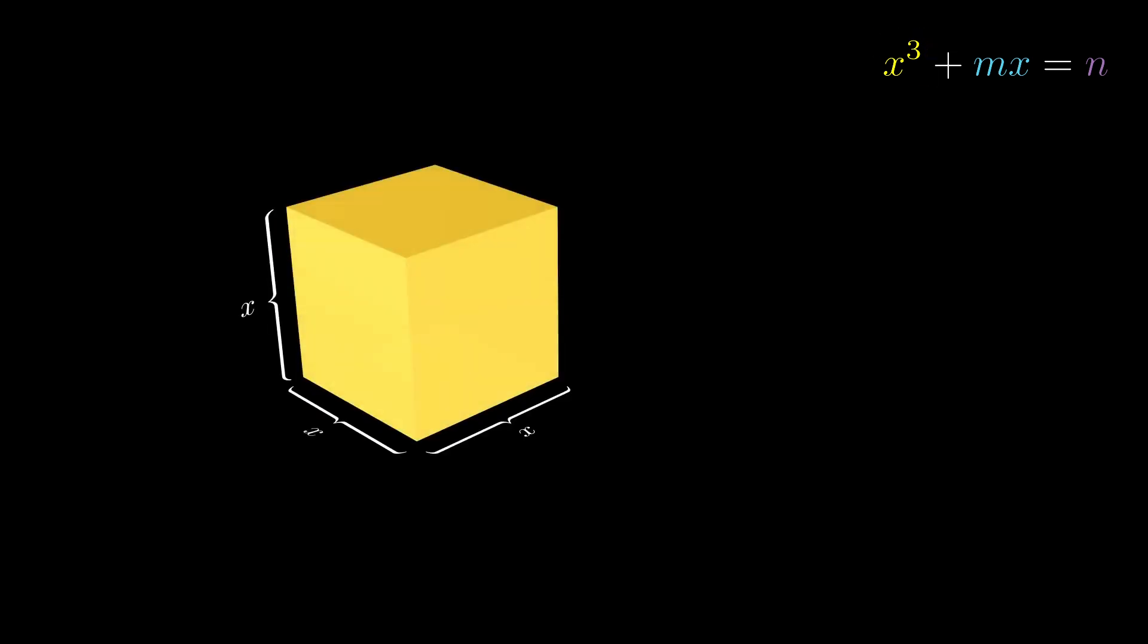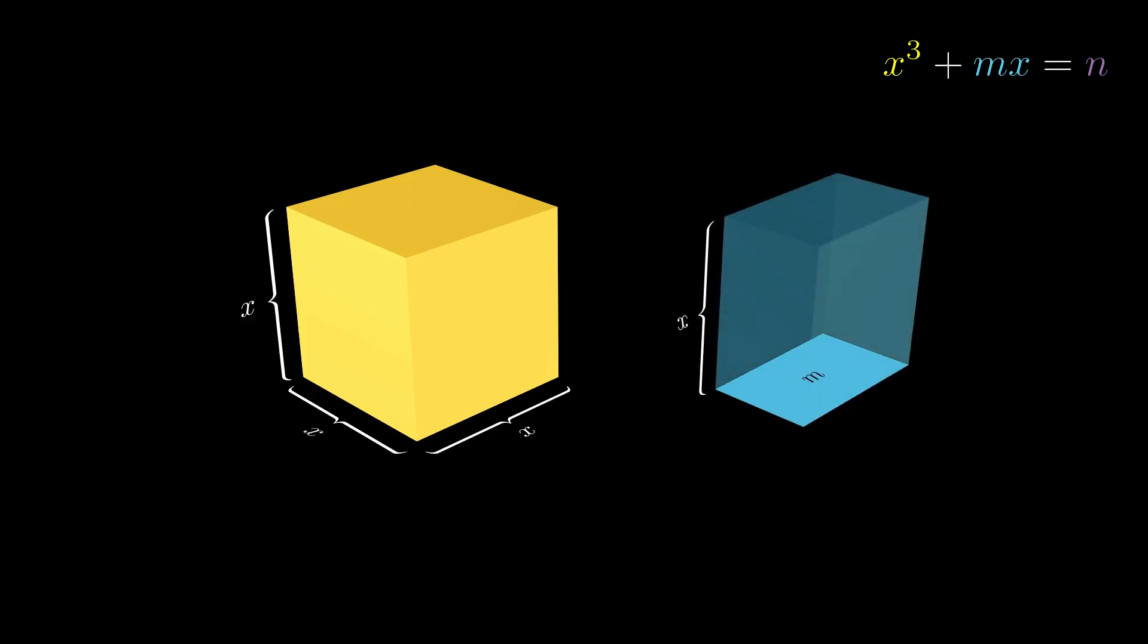So, x³ can be visualized as the volume of a cube with side lengths equal to x. mx can be visualized as the volume of a prism with the height of x and bottom area equal to m. According to the equation, the volume of the yellow cube plus the blue prism should equal n.